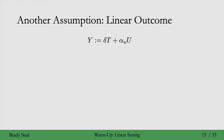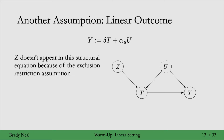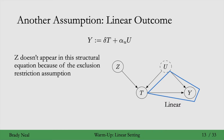Importantly, in this structural equation, z doesn't appear. That's because of the exclusion restriction assumption — z isn't a parent of y, so it's not part of the causal mechanism that generates y. And this causal mechanism we're assuming is linear in this slide. That's the assumption we're introducing here.